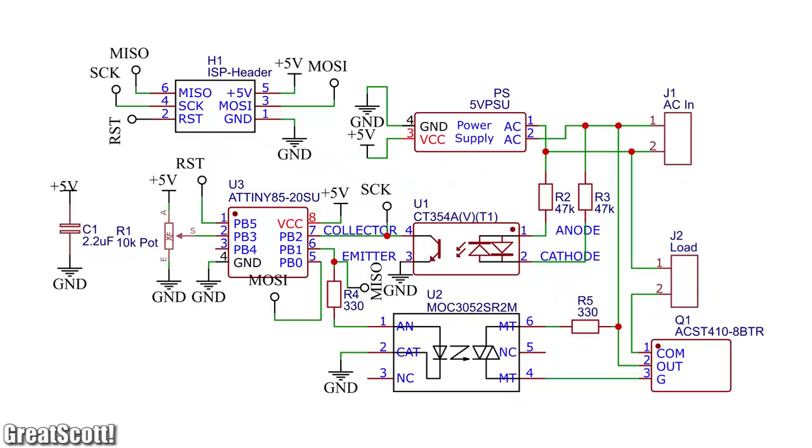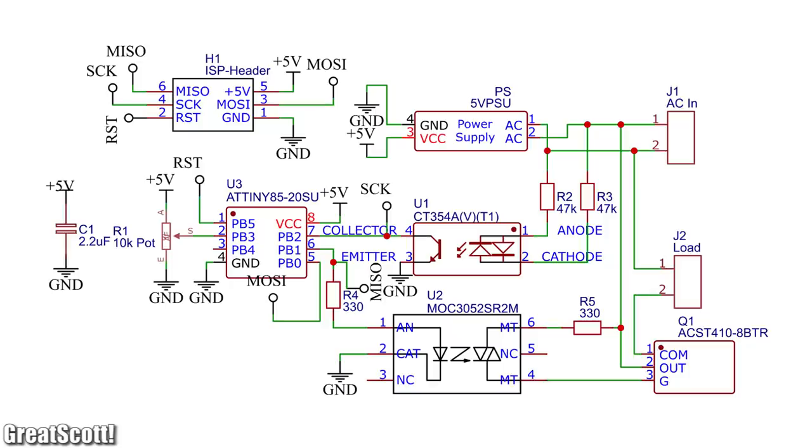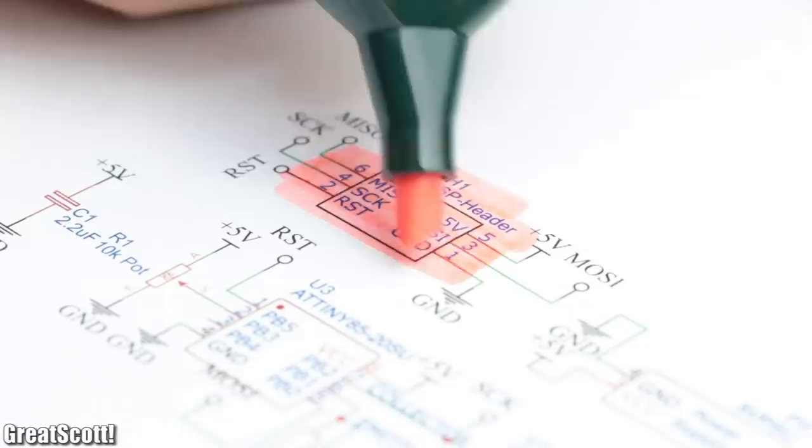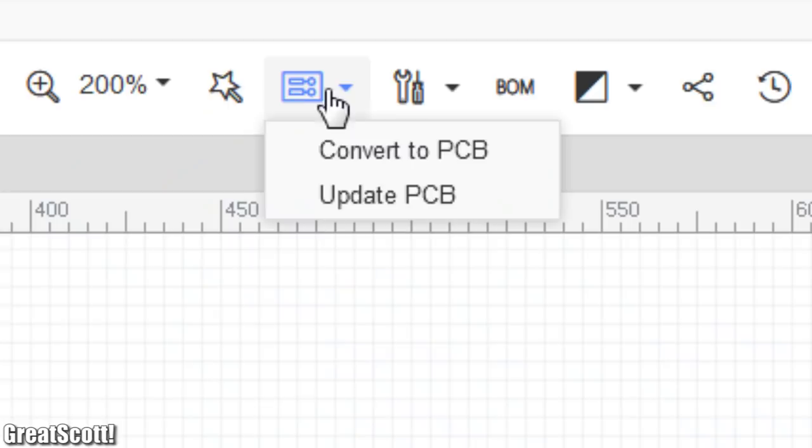Which through the help of EasyEDA I turned into a more pleasant to look at schematic. To which I also added an ISP header to later easily program the microcontroller.